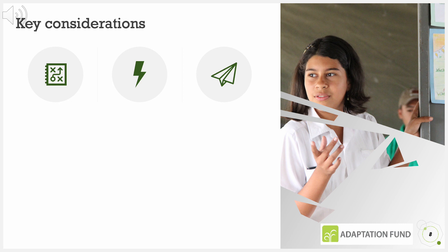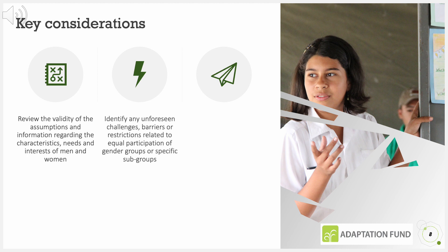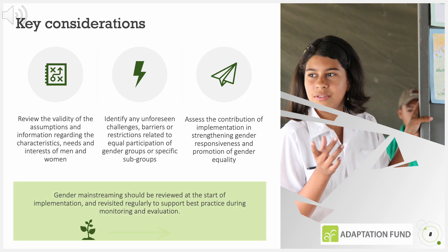Key considerations for inception or early implementation include: review the validity of the assumptions and information regarding the characteristics, needs and interests of men and women; identify any unforeseen challenges, barriers or restrictions related to equal participation of gender groups or specific subgroups; and assess the contribution of implementation in strengthening gender responsiveness and promotion of gender equality. Gender mainstreaming should be reviewed at the start of implementation and revisited regularly to support best practice during monitoring and evaluation.